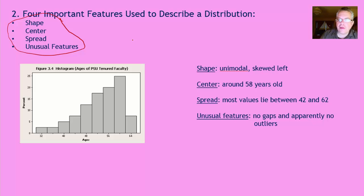All right, shape we've talked about in the previous slides. The shape is unimodal. There's one major peak here, and it's skewed to the left. It's stretched out to the left. That would be the way to describe the shape. Okay, so we did that.